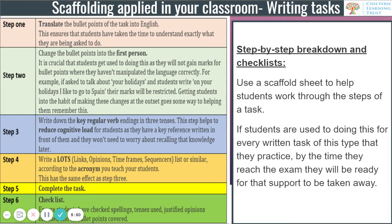The first scaffold task we're looking at is for writing. The first task I normally give my students is a step-by-step breakdown and checklist. We use scaffold sheets to help students work through the steps of the task — so step one might be to translate the bullet point into English, step two to change the bullet point into a different person, and so on. On the left-hand side you can see a table with an example of all the different directions I give students throughout the task before they actually complete the writing task.